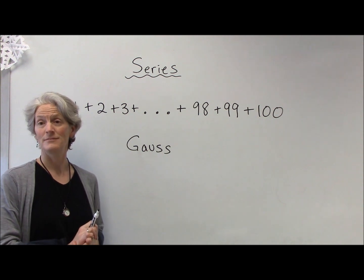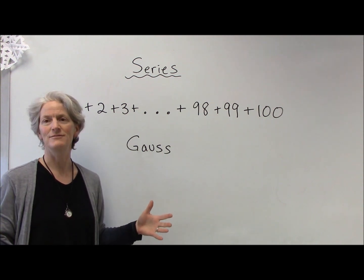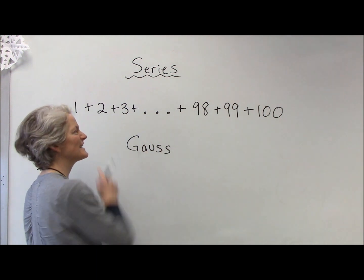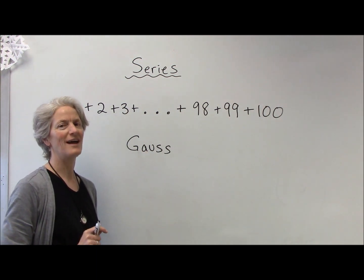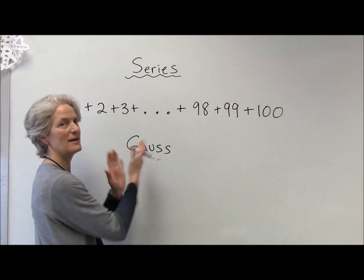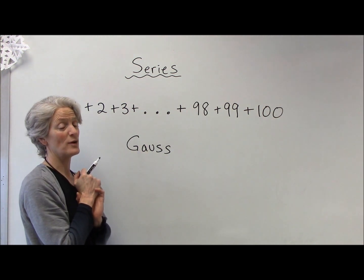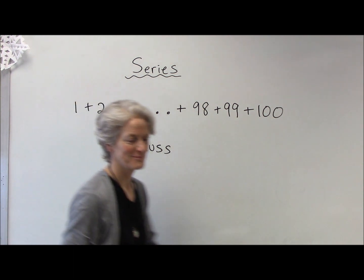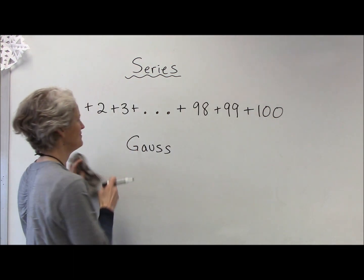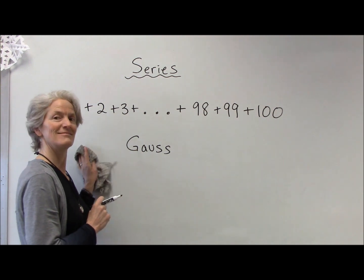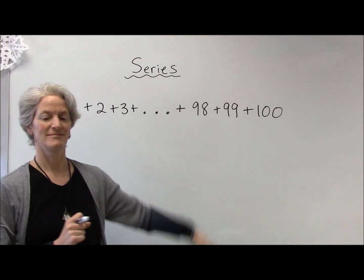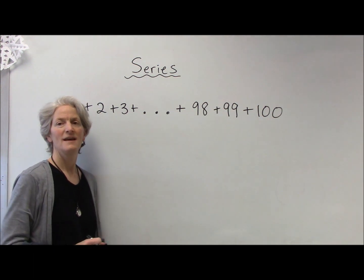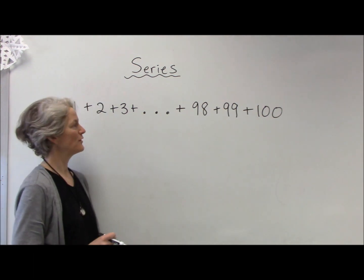The story goes that moments later, seconds later, Gauss had the sum. How did he do it? Pause the video and try to come up with a way you could find the sum of all the integers between one and a hundred. What's great is that Gauss could actually do it even then, faster than if you had a calculator.